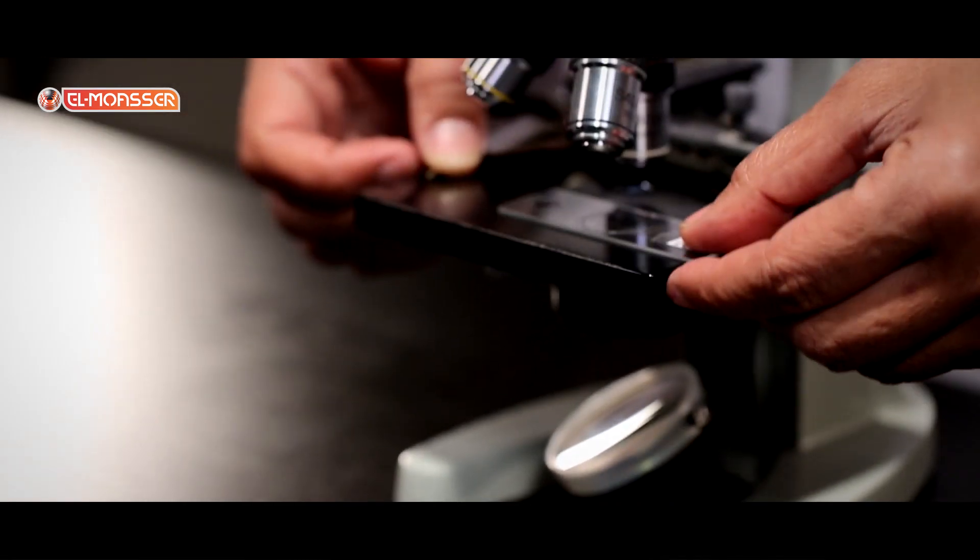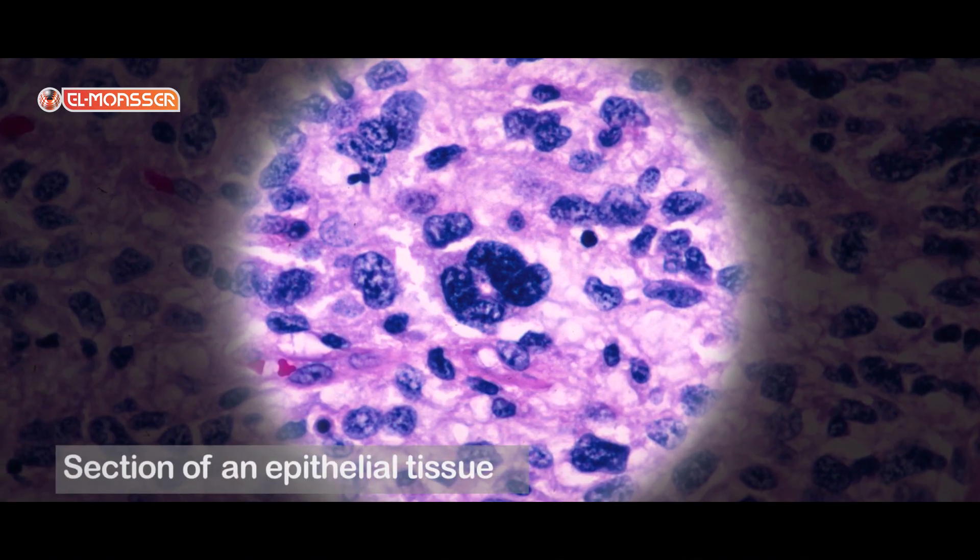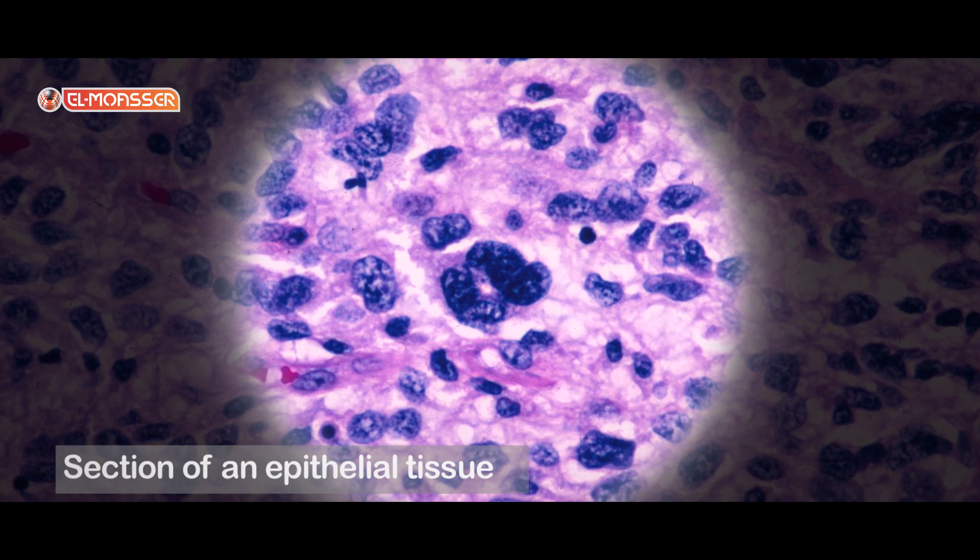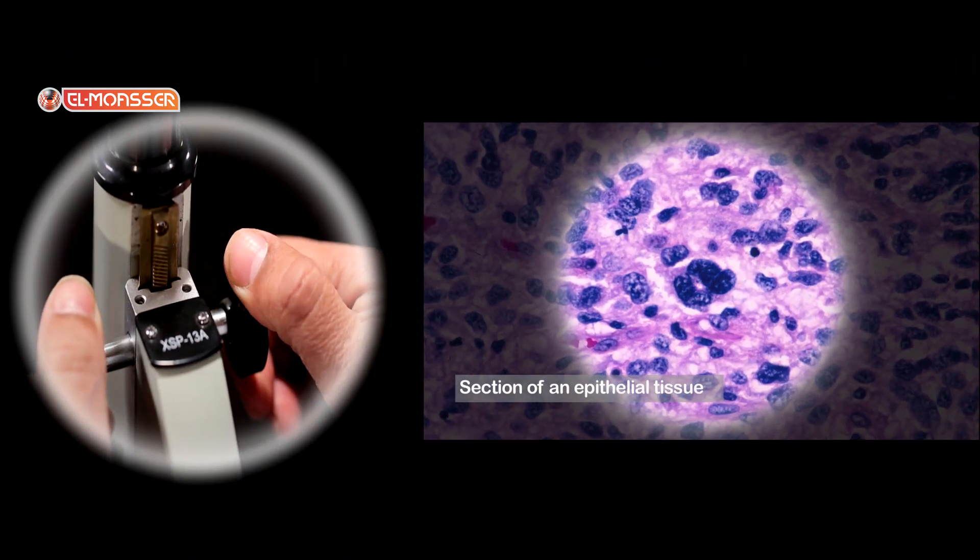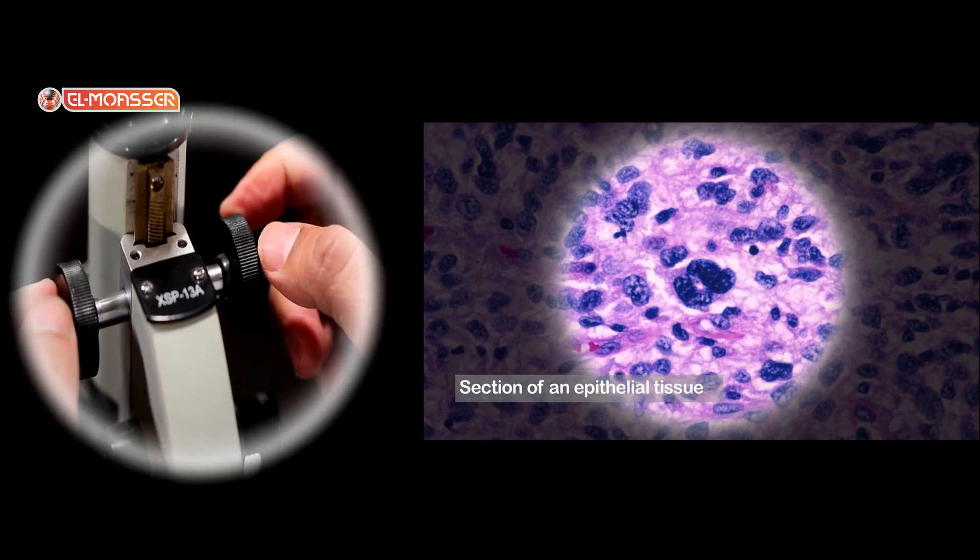Place the third slide on the stage. This is a section of an epithelial tissue. The epithelial tissue is composed of simple adjacent and identical cells.